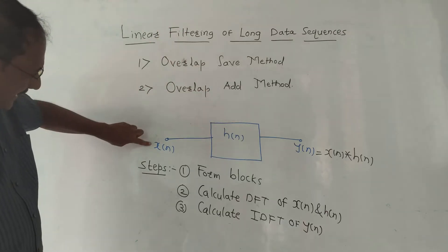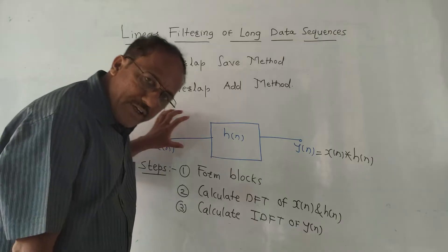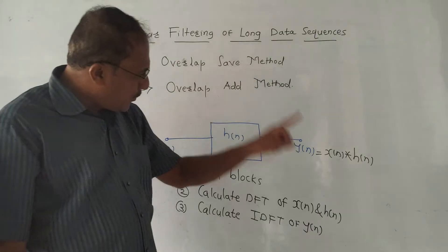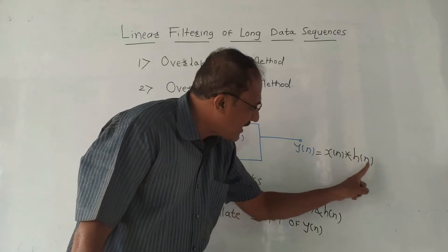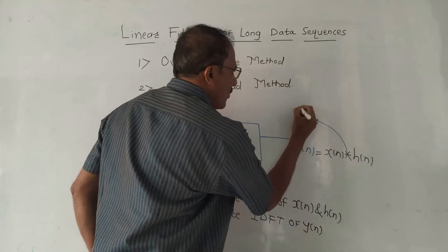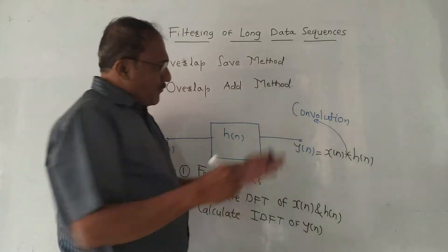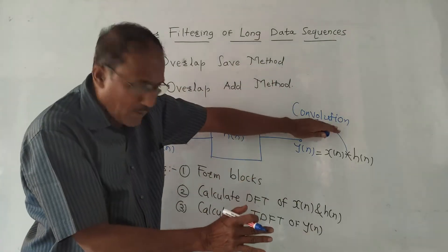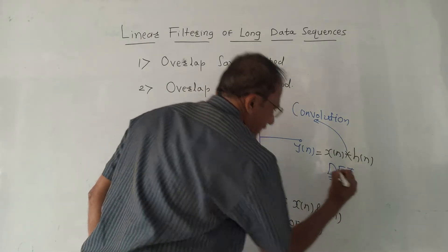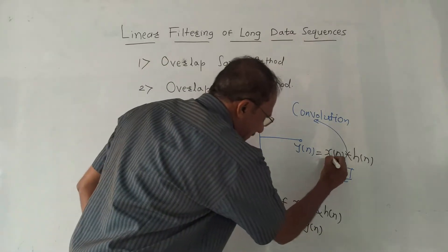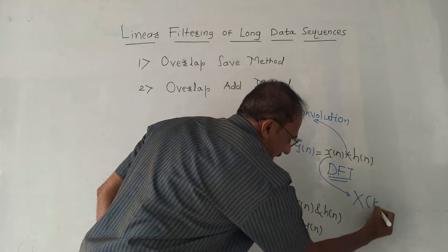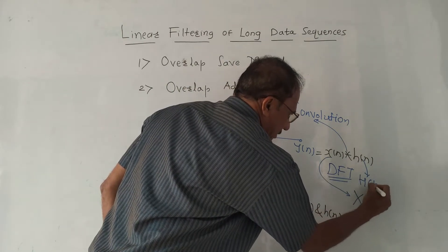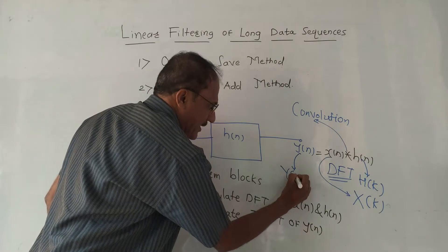In the block diagram, X(n) stands for the input signal which we want to filter out. H(n) is called the impulse response of the system, and Y(n) is the output. The output of the system is expressed as X(n) asterisk H(n), where asterisk denotes convolution. In the DFT domain, DFT of X(n) is denoted by capital X(k), DFT of H(n) by capital H(k), and DFT of Y(n) by capital Y(k).